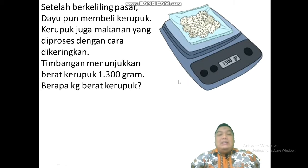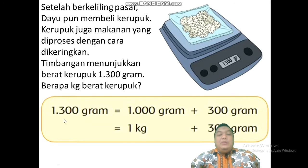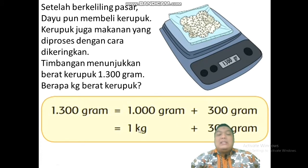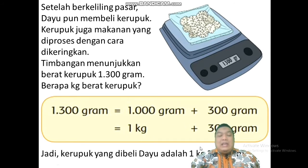Dijadikan kilogram berapa? 1300 gram itu sama dengan 1000 gram ditambah 300 gram. 1000 tambah 300 sama dengan 1300. Ini dijadikan kilo 1000 gramnya — berapa 1000 gram? Sama dengan 1 kilo. Berarti jawabannya: 1 kilo lebihnya 300 gram. Jadi, kerupuk yang dibeli Dayu adalah 1 kilo lebihnya 300 gram.